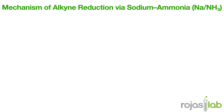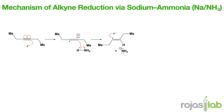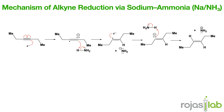Let's talk about alkynes, specifically the reduction of alkynes via the sodium-ammonia pathway using sodium and ammonia. The first step is a single electron transfer to generate a radical anion of the alkyne. From here, protonation occurs — which is why we need the ammonia — to generate a vinyl radical. Next, a second electron transfer occurs, resulting in a vinyl anion, which is then protonated to give the trans-alkene. This generally always produces the trans or E-alkene, and typically occurs under cold, basic conditions.